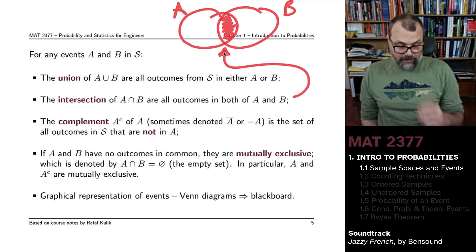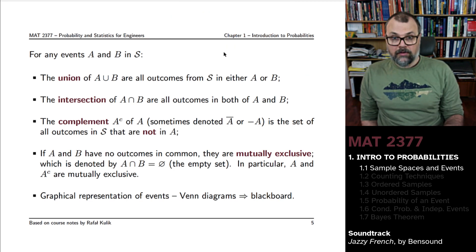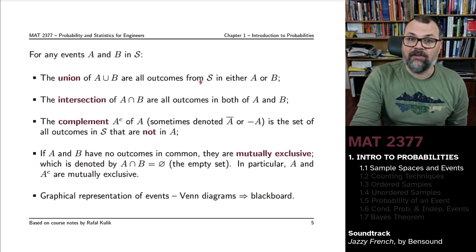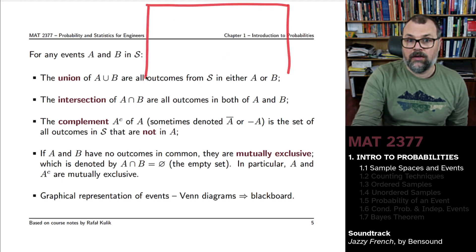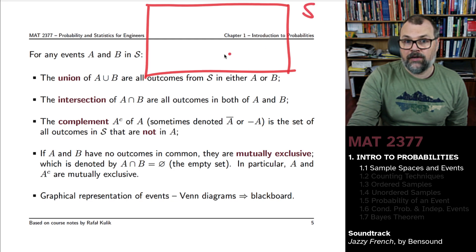The complement of an event would be everything which is not in the event. Here it is useful to draw the box of outcomes. If this is an event A, the complement of A would be everything which is not in A.